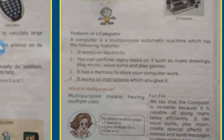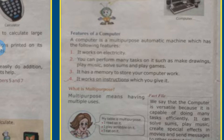What are the features of a computer? A computer is a multipurpose automatic machine which has the following features: it works on electricity; you can perform tasks on it such as make drawings, play music, solve sums, and play games; it has a memory to store your work; and it works on instructions which you give it. It means when you give the instruction, then it will work — otherwise it will not work automatically. So a computer needs instructions.